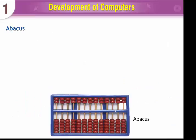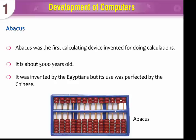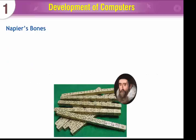Abacus was the first calculating device invented for doing calculations. It is about 5000 years old. It was invented by the Egyptians but its use was perfected by the Chinese.